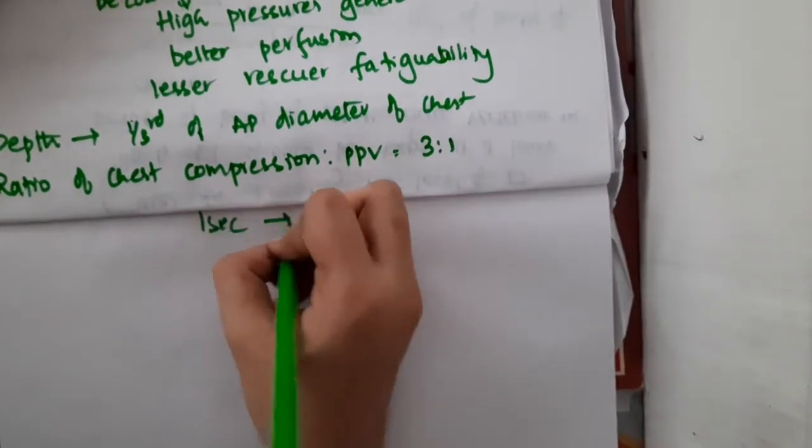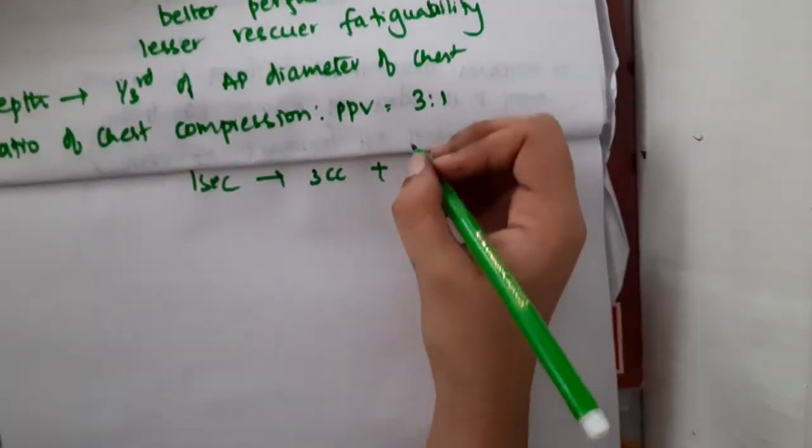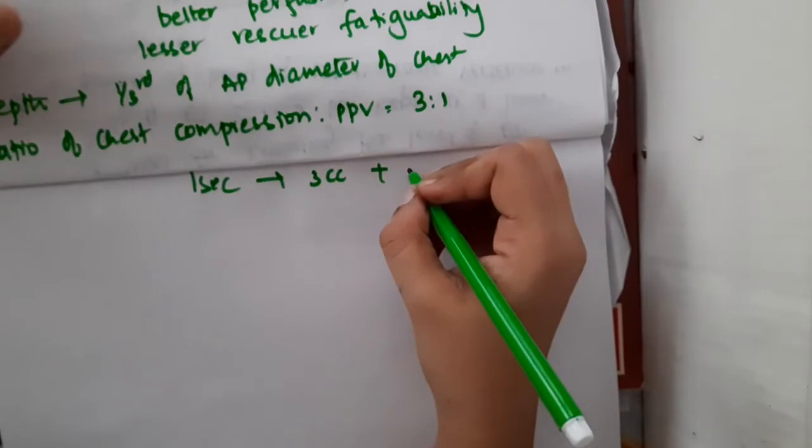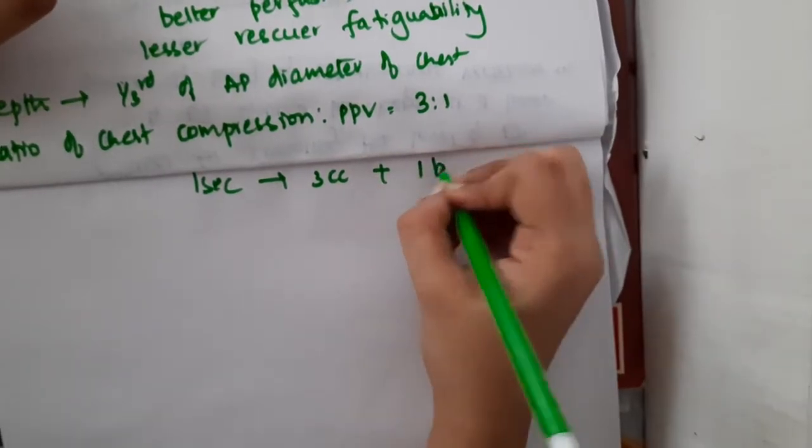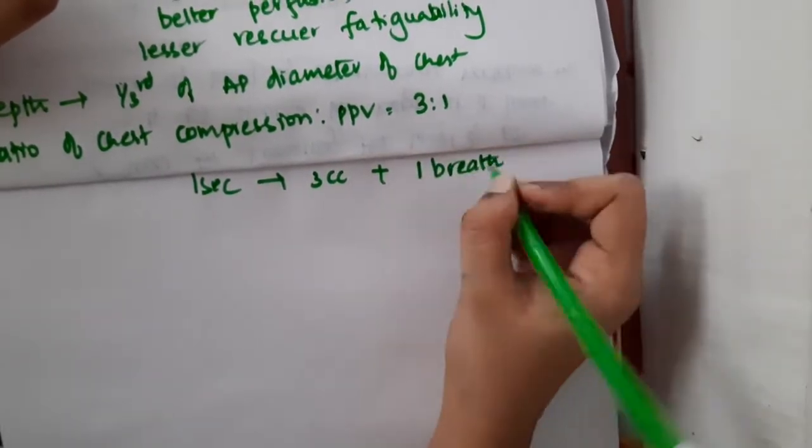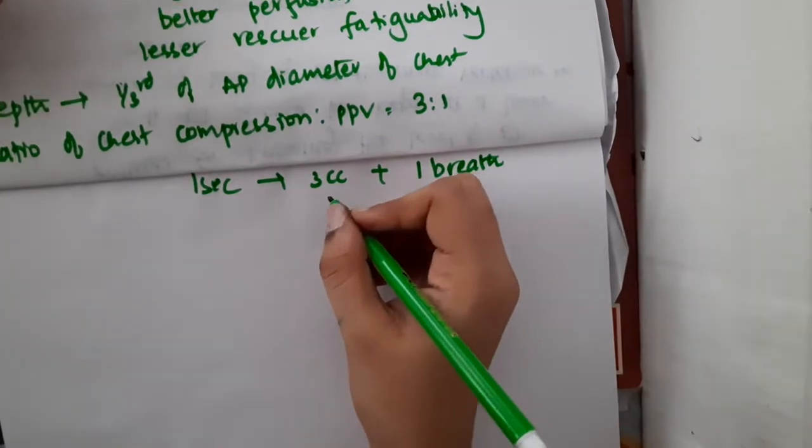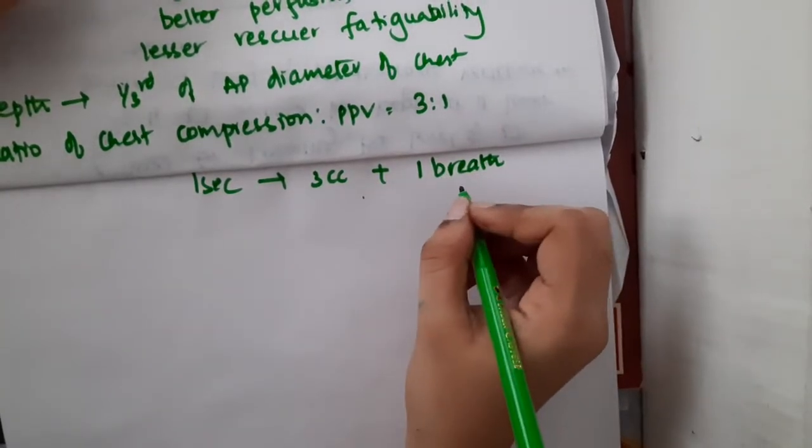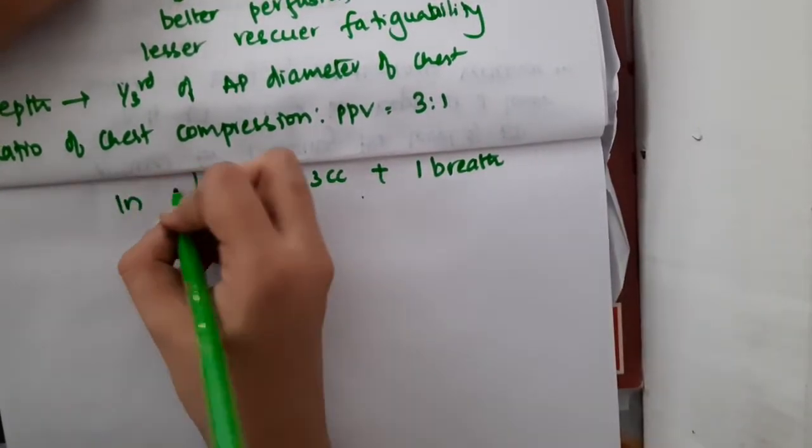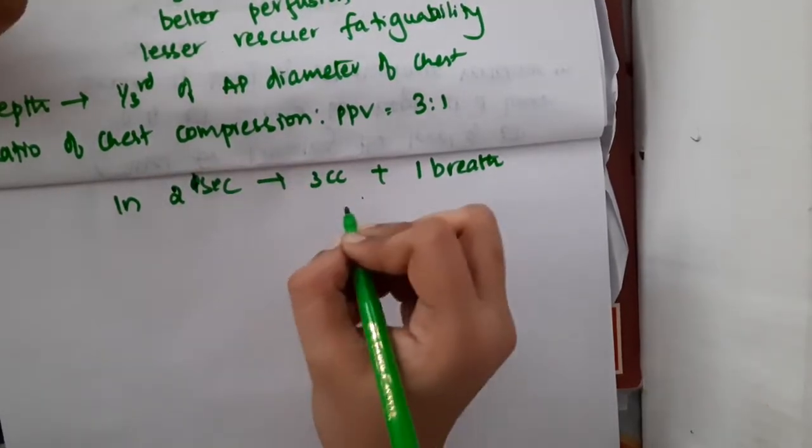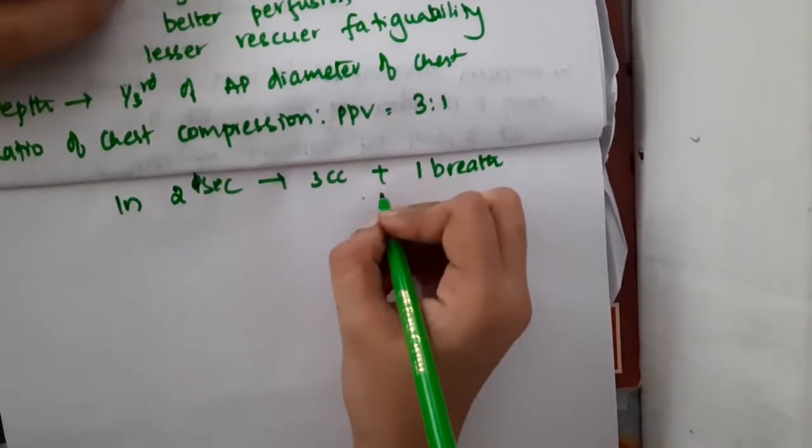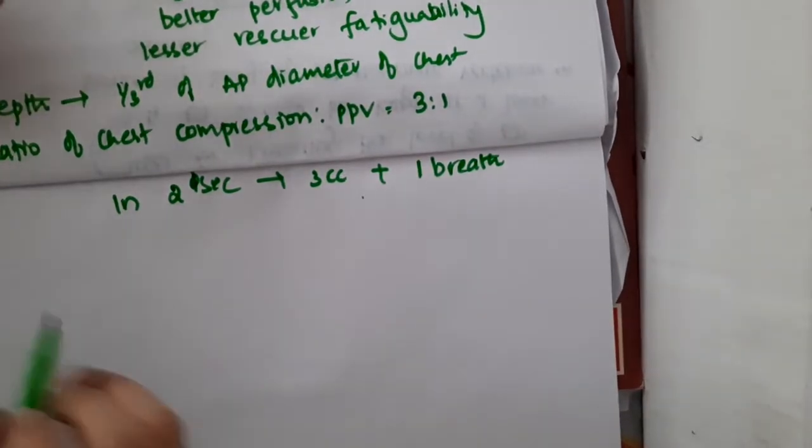In two seconds, you should give 3 chest compressions and one breath. Three chest compressions should be given and one breath should be given in two seconds to the baby.